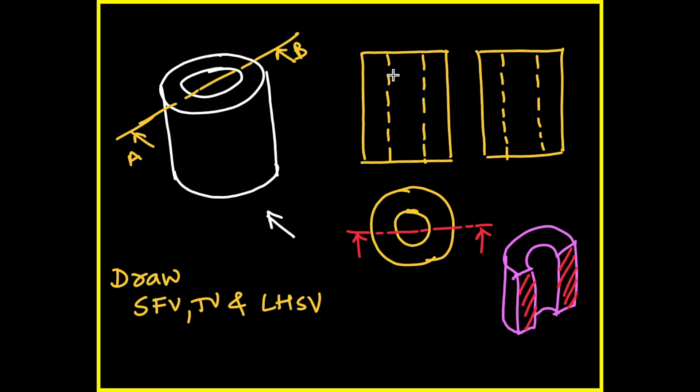So what will change? In front view, these dotted lines will become dark, and we need to draw hatching at 45 degrees.